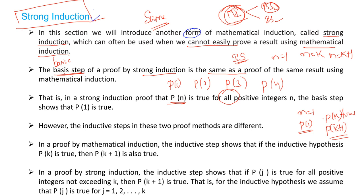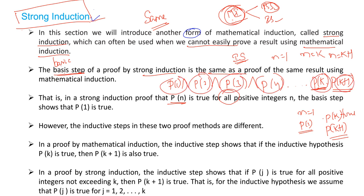In Strong Induction, we say that P(1) and P(2) and P(3) and P(4) and so on — up to P(K) — we assume all of these are true. And from that, we prove that P(K+1) is also true. This should be true for all positive integers in Strong Induction. That is why it is called 'strong' — it assumes all values before K are true.